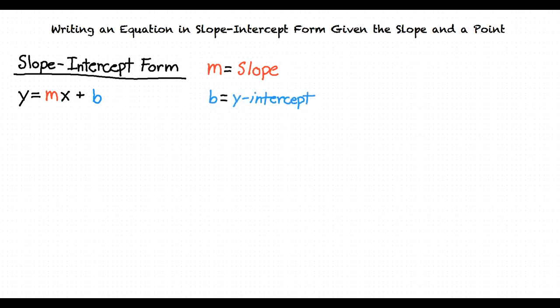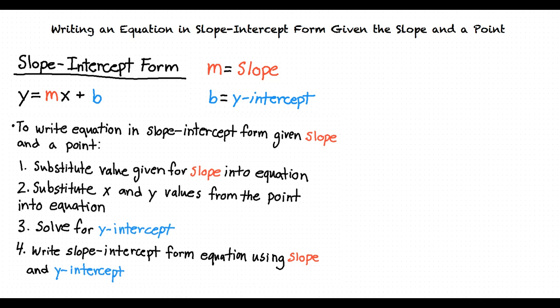To write an equation in slope-intercept form given the slope and a point, we must substitute the value for the slope into the slope-intercept form equation. We must also substitute the x and y values of the point given into the equation, and solve for the numerical value for the y-intercept. Once we have solved for the y-intercept, we can write the slope-intercept form equation.